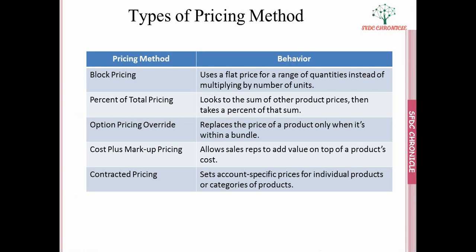Percent of total pricing: suppose I have four products in my quote line editor. The fifth product I choose should be a certain percentage of those four products — say 20% of whatever net price or list price those four products have. That will be the list price of the fifth product. That is how percent of total pricing works.